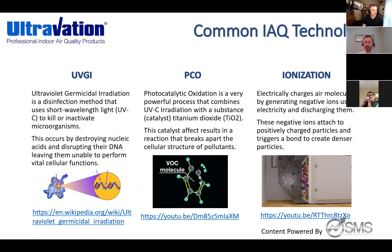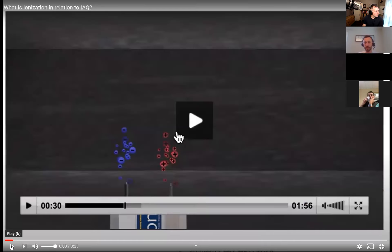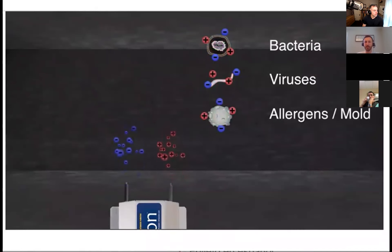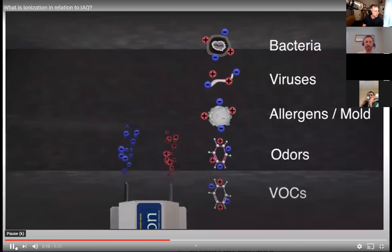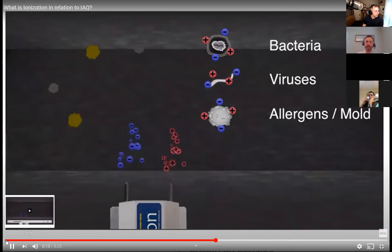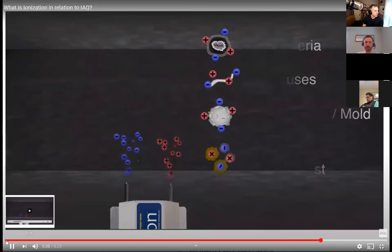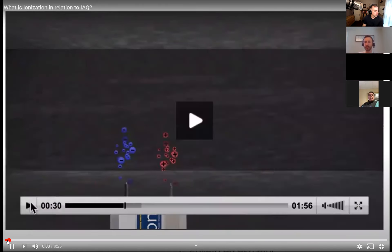Ionization is the other common IAQ technology. You mount this right before your air filter. When ionization is taking place, it's electrically charging air molecules by generating negative ions and discharging them. These negative ions attach to positively charged particles and trigger a bond to create denser particles — basically taking any filter, whether a one-inch, MERV-11, or MERV-13 filter, and enhancing it. It clumps up bacteria, viruses, allergens, molds, odors, and VOCs, making them bigger and allowing them to be caught in your air filter a lot better.